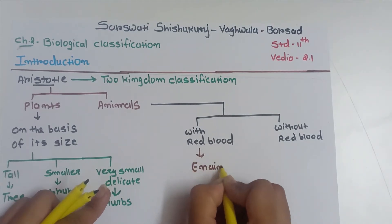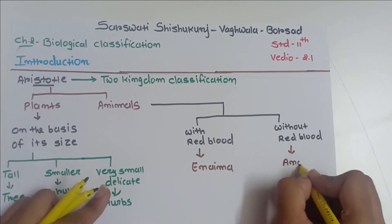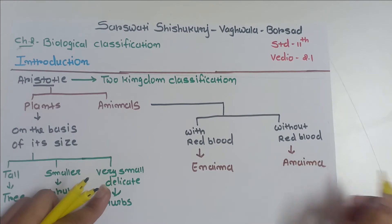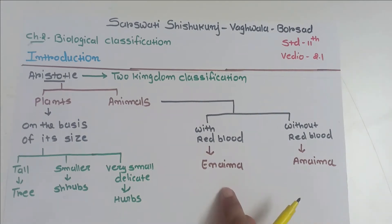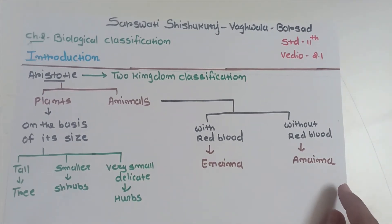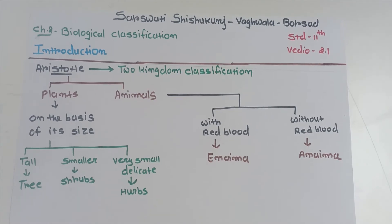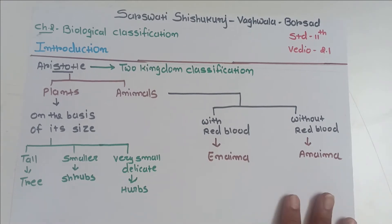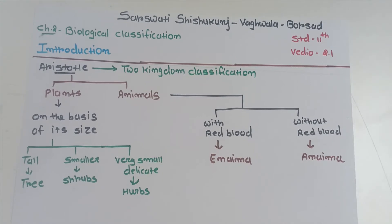Animals with red blood were known as Enaima, and animals without red blood were known as Anaima. So Aristotle divided the animal kingdom into two categories: Enaima and Anaima. This was a very basic classification. All plants synthesize their own food so they are autotrophs, but animals do not synthesize their food so they are heterotrophs.